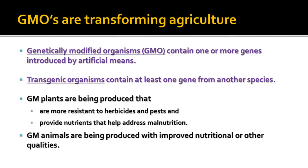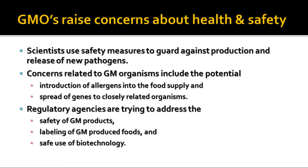You can also make plants and animals with improved nutritional qualities that can help address various kinds of malnutrition and nutritionally related conditions, so lots of things can be done to benefit mankind. However, these GMOs raise concerns about health and safety, and there are a lot of different objections to using GMOs widely.